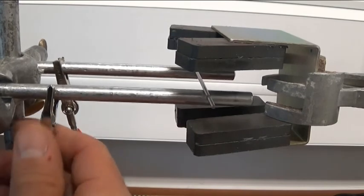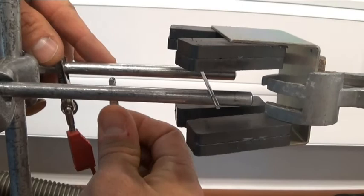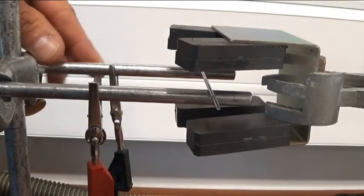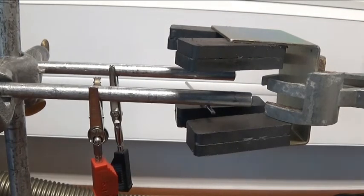If I now take the crocodile clips and I change them round, so I put the front one on the back and the back one on the front, and we are now going to change the direction of the current, what we are going to see is it is going to go the opposite way.